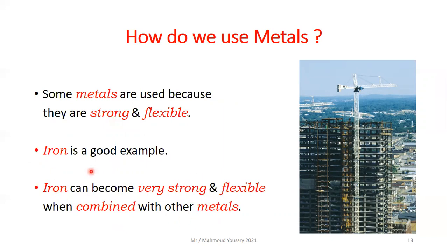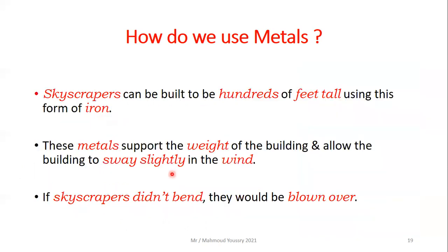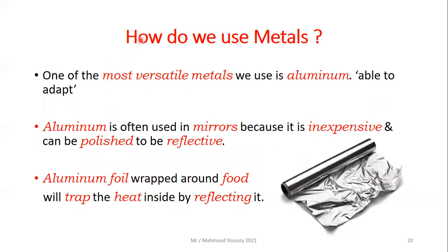When iron combines with other metals it can be very strong and flexible. Skyscrapers hundreds of feet tall can be built using this form of iron. These metals support the weight of the building and allow it to sway slightly in the wind without being blown over — if the skyscrapers didn't bend, they would be blown over.